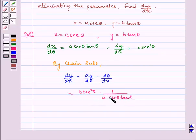We see here one sec theta gets cancelled by one sec theta, so we are left with b by a sec theta by tan theta.